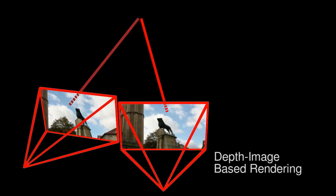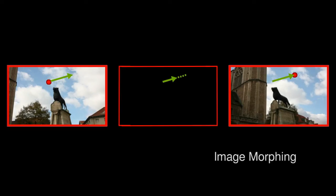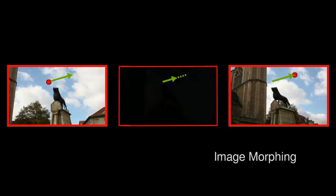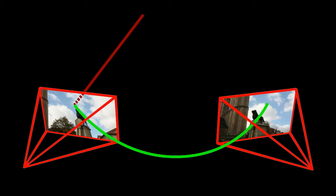We propose a novel approach to rendering and reconstruction that combines the strengths of depth image-based rendering and image morphing techniques. Our rendering pipeline uses depth estimates to obtain a 3D position for every pixel of every input image. We also assume to know the position of the corresponding pixel positions in the neighboring views.